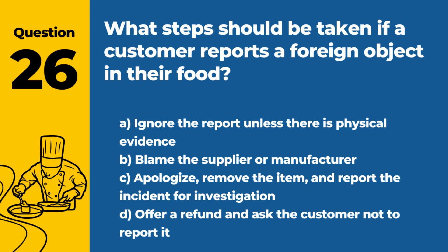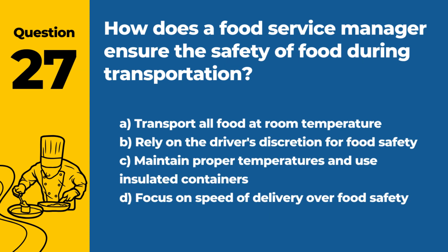Question 26: What steps should be taken if a customer reports a foreign object in their food? a. Ignore the report unless there is physical evidence. b. Blame the supplier or manufacturer. c. Apologize, remove the item, and report the incident for investigation. d. Offer a refund and ask the customer not to report it. Answer: c. When a customer reports a foreign object in their food, the appropriate response is to apologize, remove the item, and report the incident for further investigation to prevent future occurrences.